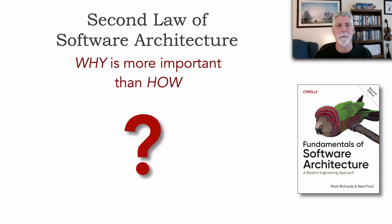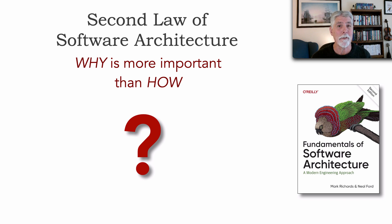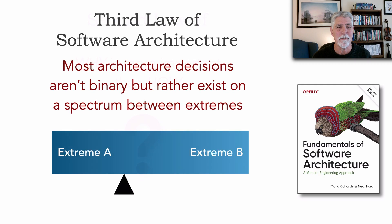Our second law of software architecture is the famous 'why is more important than how,' which describes understanding why you made a certain design decision — something we discovered while writing the first edition really becomes more important than seeing how something works. We did also coin a third law of software architecture in the second edition: most architecture decisions aren't binary, but rather exist on a spectrum between extremes.